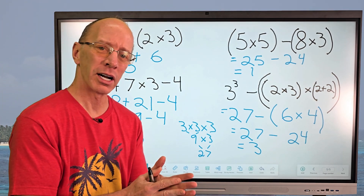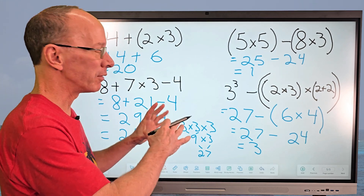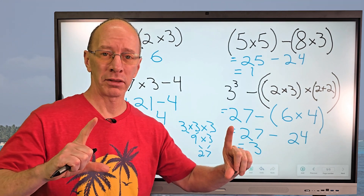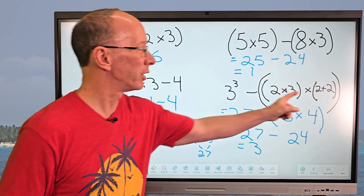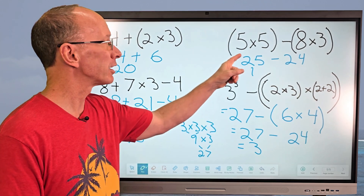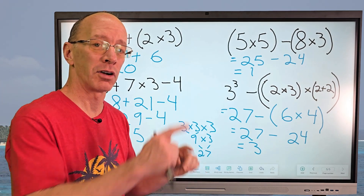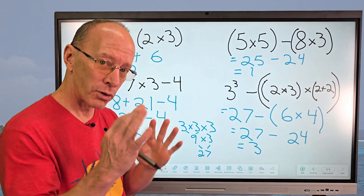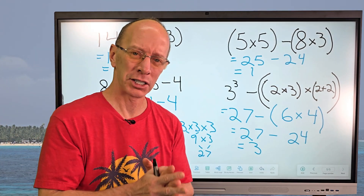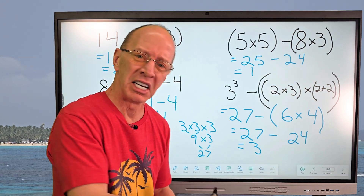These are a lot of fun! To recap, order of operations means doing a certain sequence of events: first what's inside parentheses, then exponents — some problems have them, some don't — then multiplication and division from left to right, and finally addition and subtraction from left to right. Thanks so much for watching! Please hit that subscribe button right there.